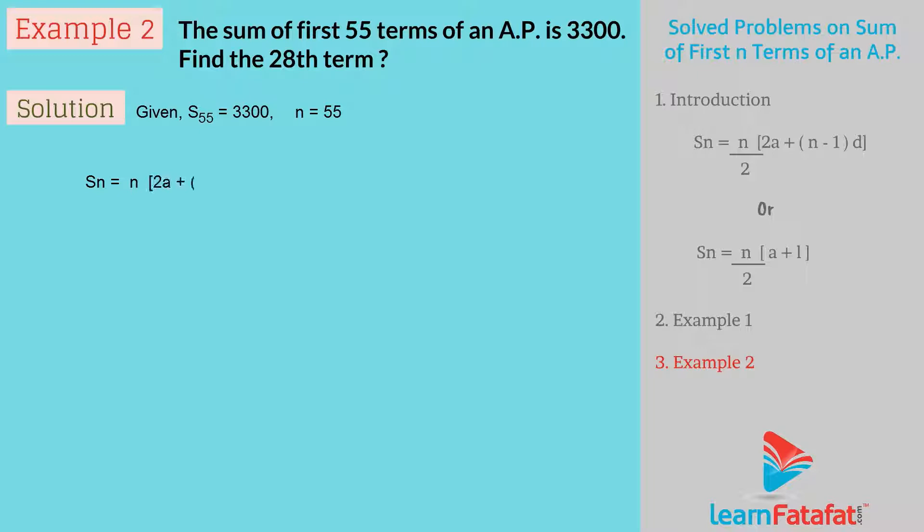Sn equals n upon 2 into 2a plus n minus 1 into d. So 3300 equals 55 upon 2 into 2a plus 55 minus 1 into d. 3300 equals 55 upon 2 into 2a plus 54d. Taking 2 common, 3300 equals 55 upon 2 into 2 into a plus 27d.